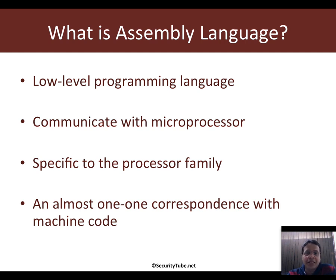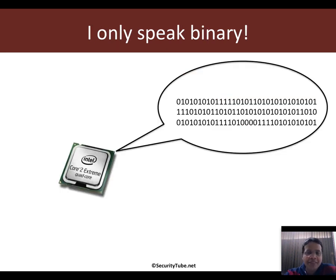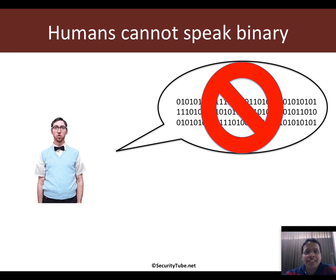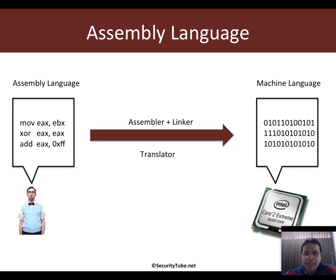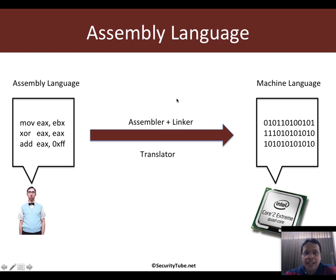In layman's terms, your processor only speaks machine language, which is binary. Unfortunately we still haven't mastered speaking in binary, and this is where assembly language basically acts as a bridge. We as humans write what we want the processor to do in assembly language, and then we use an assembler and linker — two programs we will encounter later — which translate your assembly language into machine language that your processor can understand. This entire course is about mastering assembly language and having the processor do your bidding.